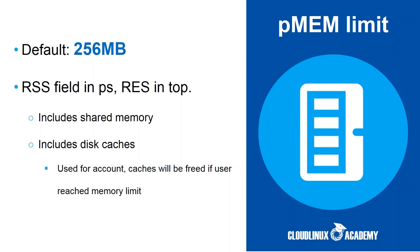The physical memory default limit is set to 256 MB. You can check physical memory usage in the RSS field in ps output or the RES column in top output. Physical memory also includes shared memory used by the customer as well as disk cache. When an LVE goes over the physical memory limit, CloudLinux will first free up memory used for disk cache, and if that is not enough, it will kill some processes within that LVE — which usually causes the web server to show a 503 error page. The physical memory limit is a much better way to limit memory for shared hosting; we strongly recommend setting vmem to 0 and using only the physical memory limit.